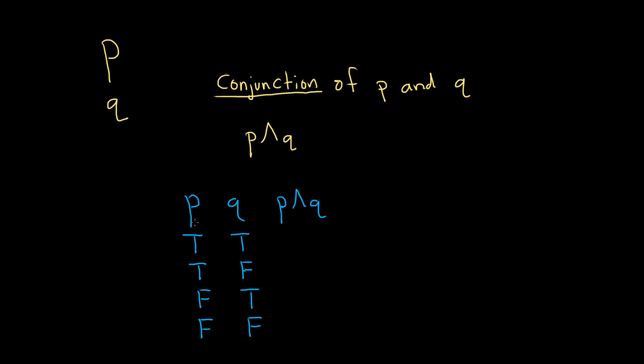So now we just have to figure out what is the truth value of p and q. So p and q, go ahead and write my little lines here. So p and q will only be true when they're both true. So that's going to be the first case here.